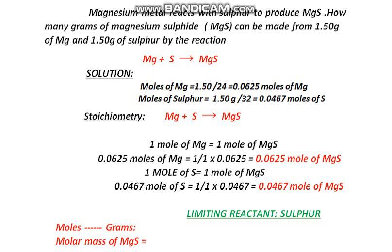Now we know that when 0.0625 moles of magnesium react with 0.0467 moles of sulfur, how much magnesium sulfide is produced? If we compare both answers, we find which one produces the least amount of product. The question asks how many grams of magnesium sulfide will be produced. The rule is that you choose the least quantity — the least quantity here is 0.0467 moles. To convert moles to grams, the formula is: mass = molar mass multiplied by moles.